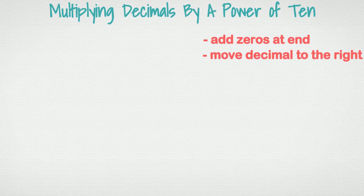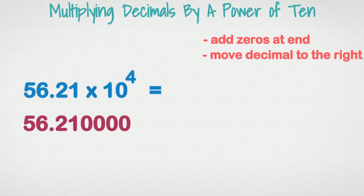Last example: 56.21 times ten to the fourth. We take our original number, add the zeros, and move the decimal place four spaces to the right. The answer ends up being five hundred sixty-two thousand one hundred.